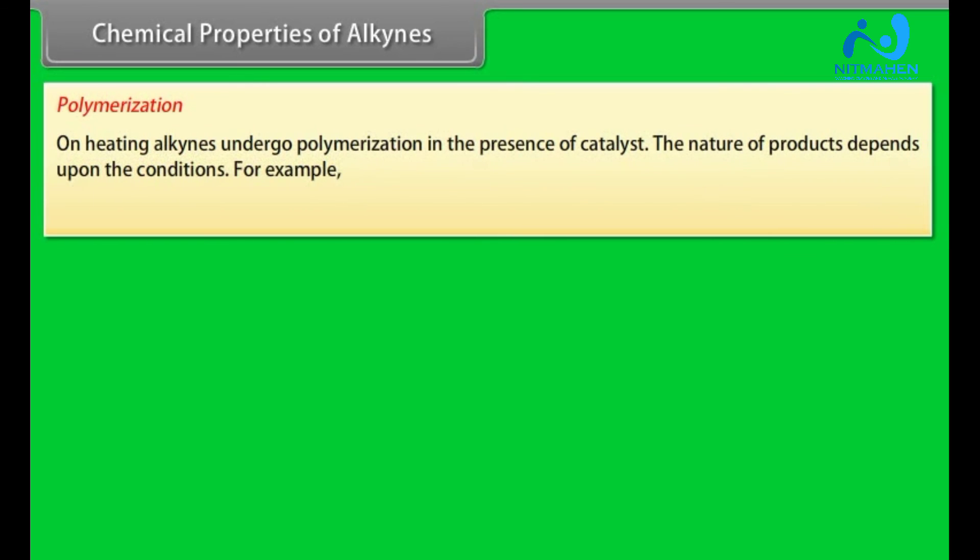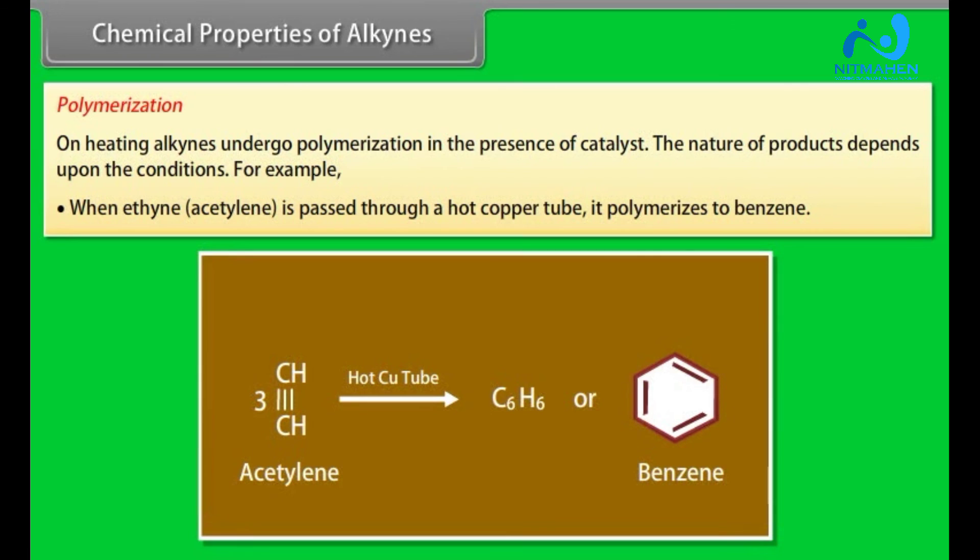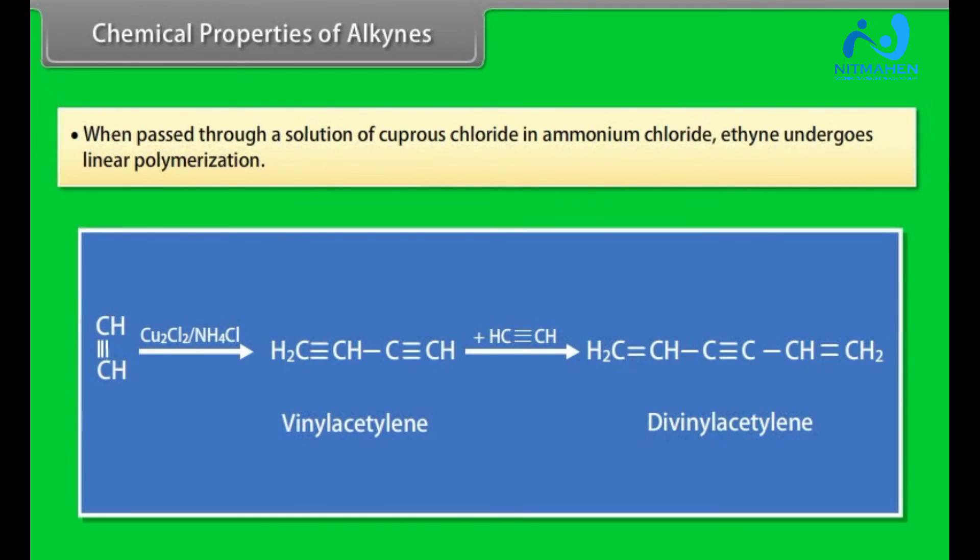Polymerization: On heating, alkynes undergo polymerization in the presence of catalyst. The nature of products depends upon the conditions. For example, when ethyne acetylene is passed through a hot copper tube, it polymerizes to benzene. When passed through a solution of cuprous chloride in ammonium chloride, ethyne undergoes linear polymerization.